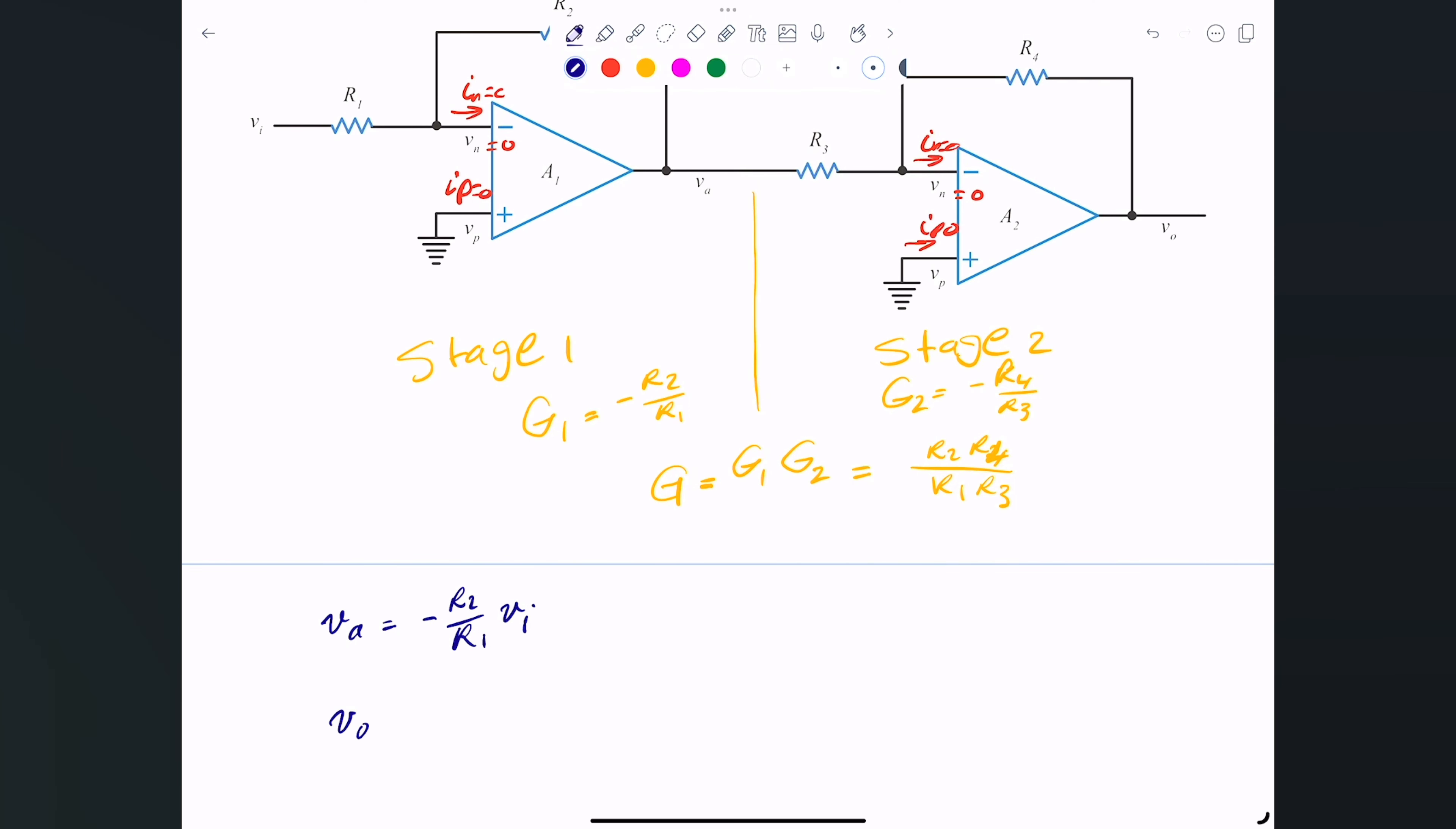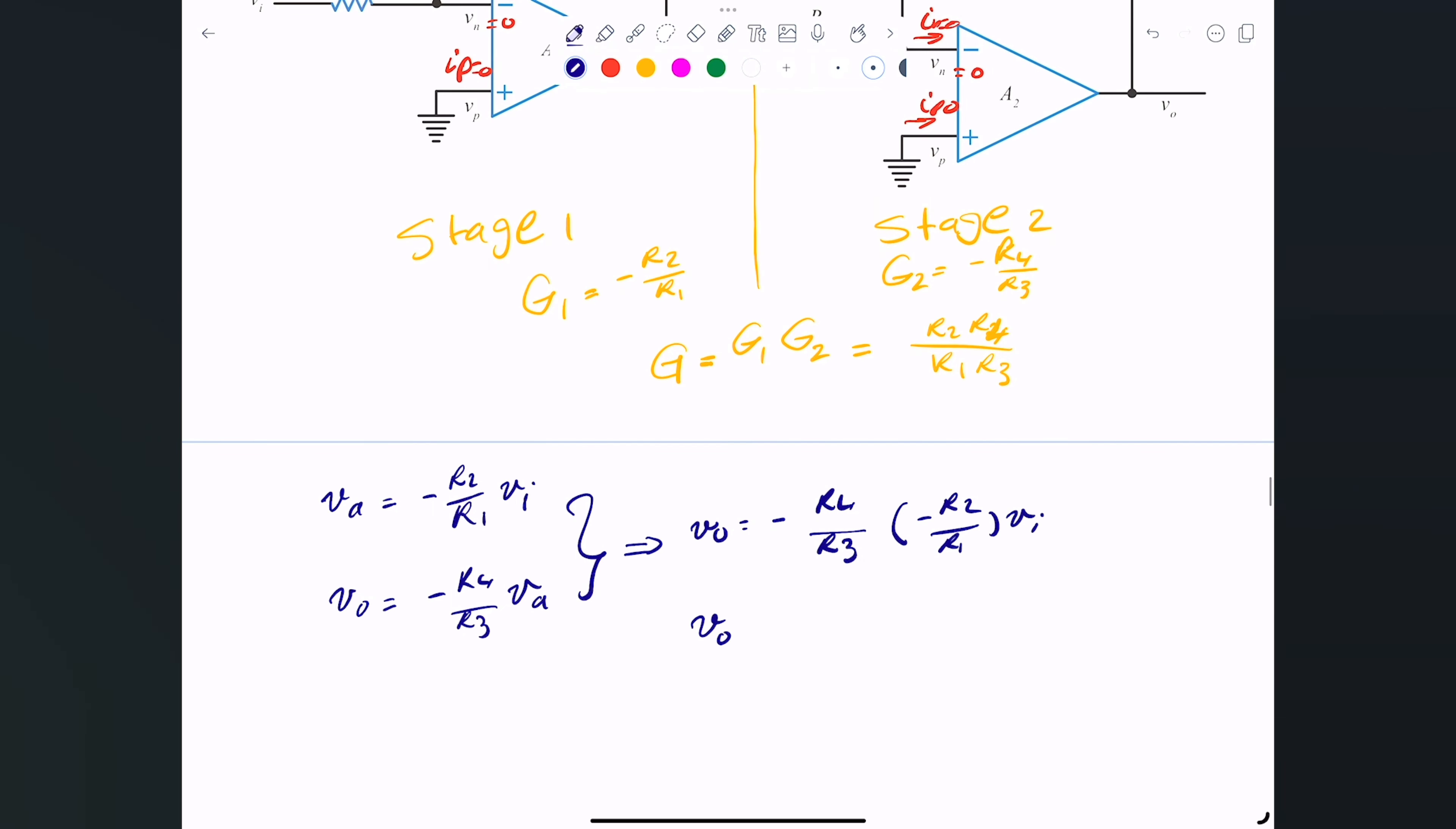Now the Va is actually the input to the second stage, so that means the V output is simply negative R4 divided by R3 times Va. So I'll take this Va and just substitute it by its value in here. So I'll combine them. Now V out will be simply negative R4 divided by R3 times negative R2 divided by R1 times Vi. And of course if I take the V out divided by V in and I call this the total gain, it will be simply R2 times R4 divided by R1 times R3, and that's exactly what we saw in here by telling you that you just multiply the gains of every different stage.